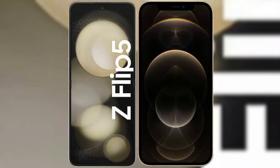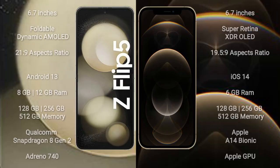I will compare the new Samsung Galaxy Z Flip 5 with iPhone 12 Pro Max. Samsung Galaxy Z Flip 5 comes with a 6.7-inch foldable dynamic AMOLED display and an aspect ratio of 21.9. iPhone 12 Pro Max comes with a 6.7-inch Super Retina XDR OLED display and an aspect ratio of 19.5:9.